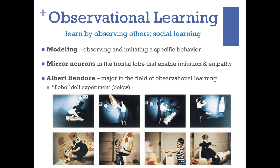Mirror neurons allow us to imitate, and empathy is essentially imitating — I'm not sad because something bad happened to me, I'm sad because I'm observing you being sad. Empathy is feeling the way someone else feels because of mirror neurons. You watch a horror movie and someone is horrendously injured and it makes you wince and cringe — that's mirror neurons, your empathy for someone else. Or you watch an injury happen in a sporting event and have to look away — that's mirror neurons, your ability to empathize.